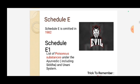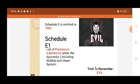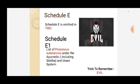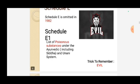Schedule E is actually omitted in 1982. Schedule E1 is the list of poisonous substances under the Ayurvedic, including Siddha and Unani systems. The trick to remember is 'E for Evil' — when we encounter evil, we think of poison. So Schedule E1 is the list of poisonous substances, and the trick is 'E for Evil.'